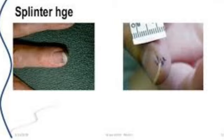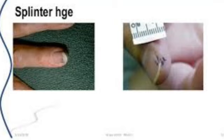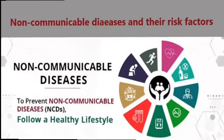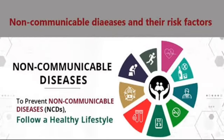Examples of deficiency diseases include rickets and marasmus. Any disease caused by the deficiency of vitamins or nutrition is a deficiency disease — for example, night blindness, which is caused by the deficiency of Vitamin A.